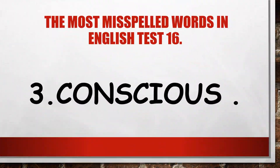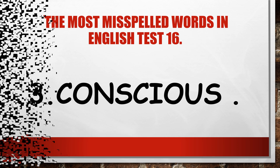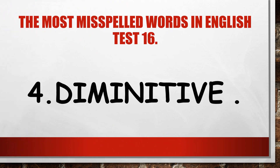Word three: conscious. Can you spell conscious? Let's reveal — conscious. Word four: diminutive. Can you spell diminutive? Let's reveal — diminutive. Word five: eternity. Can you spell eternity? Let's reveal — eternity.